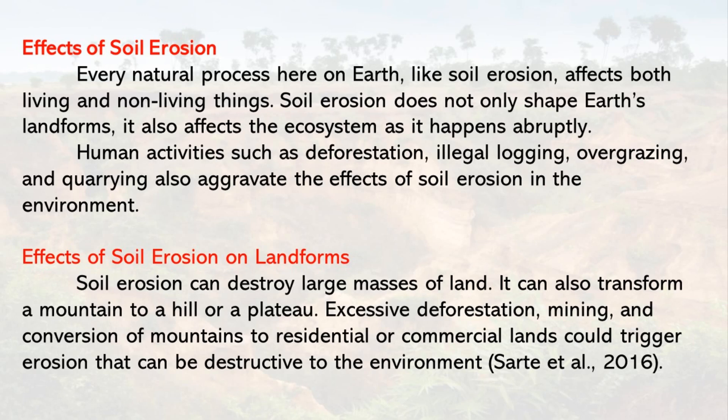Effect of soil erosion: Every natural process here on Earth, like soil erosion, affects both living and non-living things. Soil erosion does not only shape Earth's landforms, it also affects the ecosystem as it happens abruptly. Human activities such as deforestation, illegal logging, overgrazing, and quarrying also aggravate the effects of soil erosion in the environment.